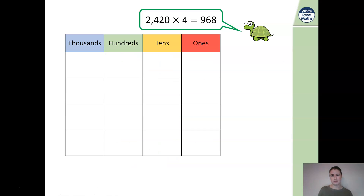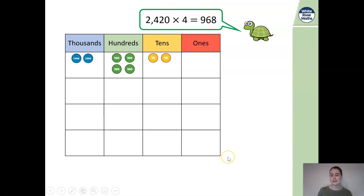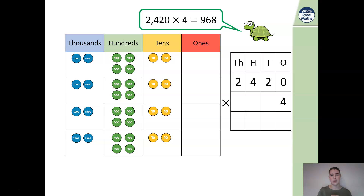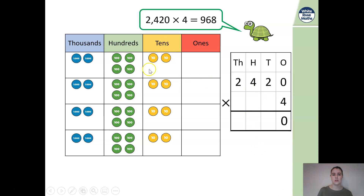Let's fix the problem for Tiny. We're going to represent 2,420. There are no ones, so we have a 0 for our ones value. We need this calculation 4 times. 0 multiplied by 4: anything multiplied by 0 is always 0, so we write 0. For the 10s: 20 multiplied by 4 — counting the columns: 2, 4, 6, 8. So we have 8 lots of tens, and we write 8.